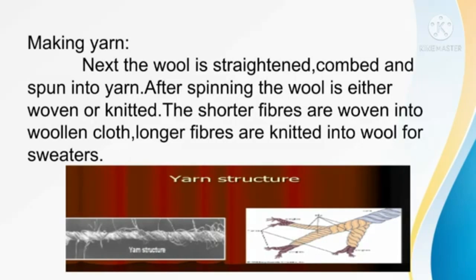After spinning, the wool is either woven or knitted. Shorter fibers are woven into woolen cloth, while longer fibers are knitted into wool for sweaters. These are the processes of wool: shearing, scouring, sorting, combing, carding, dyeing and making yarn. Students, read all these topics in your NCERT book. We will see the remaining topics in our next class. Stay home, stay safe. Thank you, students.